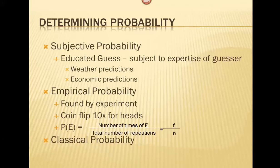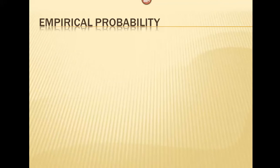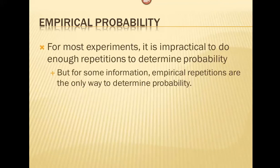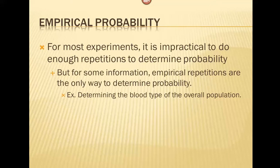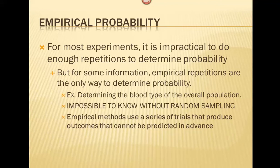Classical probability is our main focus in this section. It is simply based on theory — on how many event outcomes there are, which ones we deem to be desirable, and how many outcomes are in the sample space. For most experiences, it's impractical to do enough repetitions to determine probability, but for some information, empirical repetitions are the only way — such as determining the blood type distribution of the overall population, which is impossible to know without random sampling.